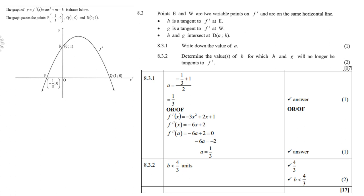Determine the values of b for which H and G will no longer be tangents to the derivative. B will have to be less than four-thirds not to be a tangent.